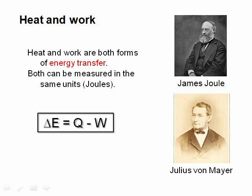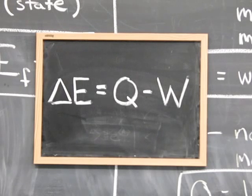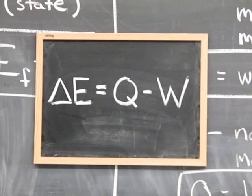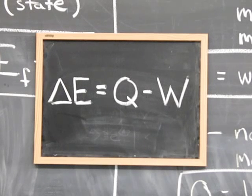The first law of thermodynamics states that the change in the internal energy of the system is the heat input to the system minus the work output of the system. The quantity on the left, delta E, is the difference in the value of a state function E at the beginning and end of a process — we don't need to know the details in between. But the heat Q and the work W on the right-hand side do depend on the exact process by which you got from one state to another. They are not state functions — they're path functions, history functions. They depend on the details of how it happened.